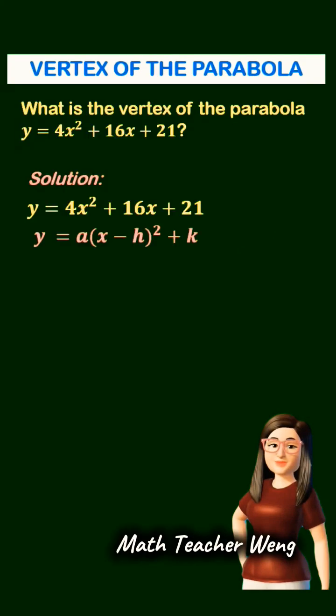One way of solving this is by rewriting this in the form y equals a quantity x minus h squared plus k by completing the square.